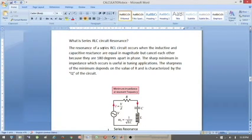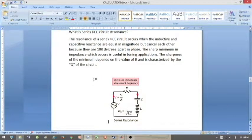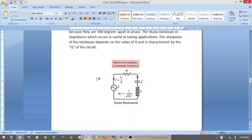What exactly is a series RLC circuit resonance? The resonance of a series RLC circuit occurs when inductive and capacitive reactance are equal in magnitude, but cancel each other because they are 180 degrees apart in phase. The sharp minimum in impedance which occurs is useful in tuning applications. The sharpness of the minimum depends on the value of R and is characterized by the Q of the circuit.